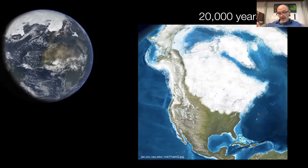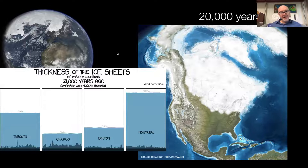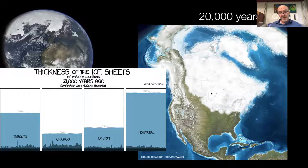There was also a large ice sheet, much larger than today, in the Antarctic and high latitude land in the Southern Hemisphere. Here's a picture showing the relative thickness of the ice sheets for various important cities 21,000 years ago at the last glacial maximum. Chicago: 900 meters of ice. Boston: 1,250 meters. Toronto: 2,100 meters. Montreal: 3,300 meters. This ice sheet was thick and it was there for tens of thousands of years.